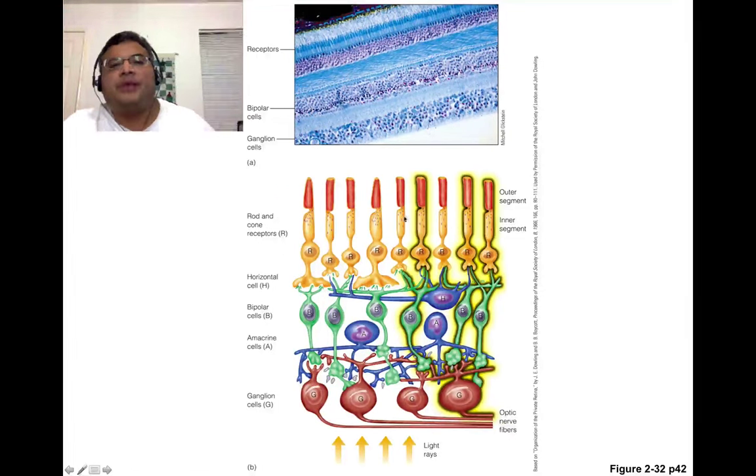You have the rods and cones, horizontal cells which help the rods and cones work together. Then you have bipolar cells which take the output of the rods and cones and feed it to the ganglion cells. And then you have amacrine cells. These amacrine cells also help the ganglion cells work together.